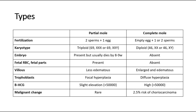In partial mole, the embryo is present but usually dies early, and fetal red blood cells and fetal parts are present as well. Whereas for complete mole, there is no embryo, no fetal red blood cells, and no fetal parts. The beta-HCG level elevation is only slight in partial mole, whereas it is very high in complete mole. For malignant change into choriocarcinoma, it is rare in partial mole but there is higher risk in complete mole.